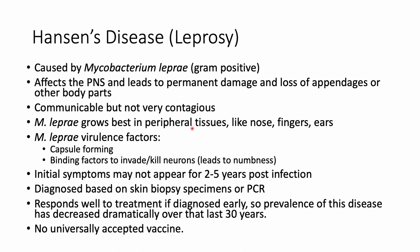Hansen's disease is communicable but not very contagious — requiring very close contact over a long period of time for transmission. The bacteria grow best in peripheral tissue at lower temperatures, affecting distal appendages like fingers, ears, and nose. Its virulence factors include a capsule to prevent phagocytosis and binding factors that allow it to specifically attach to and kill nervous system cells, leading to numbness and neuropathy. Initial symptoms may not appear for two to five years after infection.